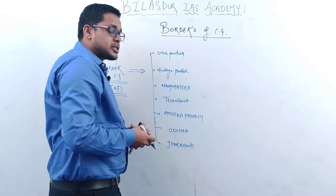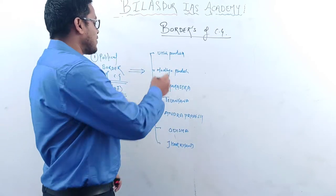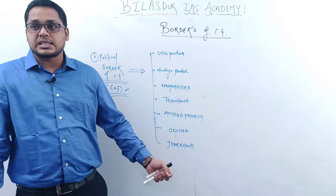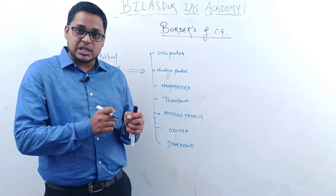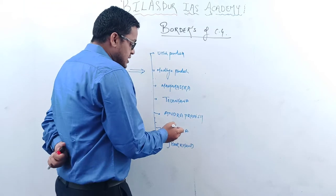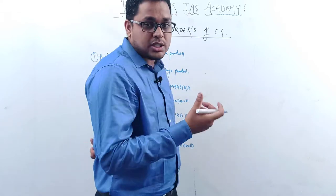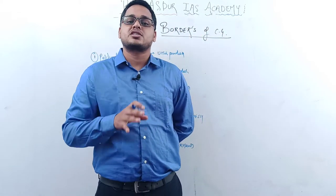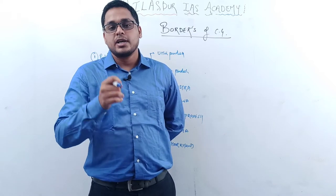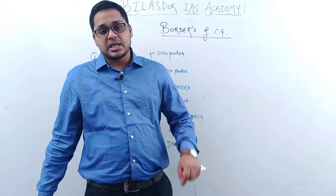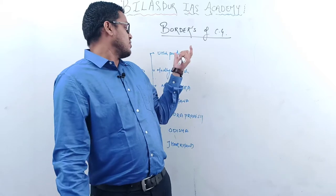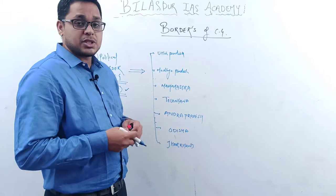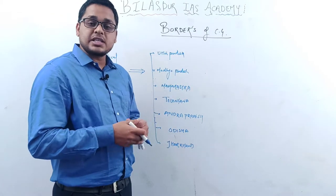Now we'll see the locational aspects of the borders. First, how many states make the border. Second, which state makes the smallest border — and the smallest border is with Andhra Pradesh. In terms of districts, the smallest border is made by Dhamtari.